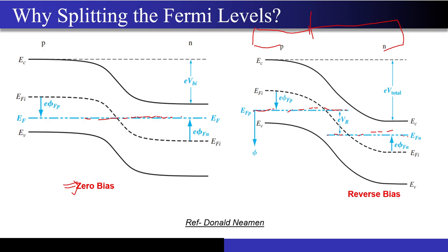Alok answered correctly: because there is a net current flowing in the semiconductor, the material is not in equilibrium. Since it is not in equilibrium, we have to use the concept of quasi-Fermi levels. That is why the Fermi level is split into two parts — Efp for holes and Efn for electrons.